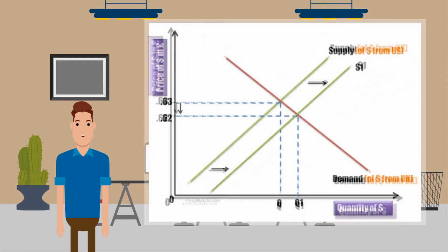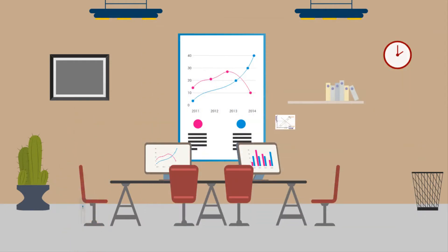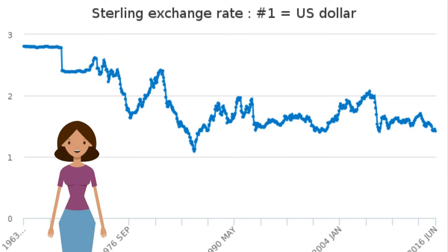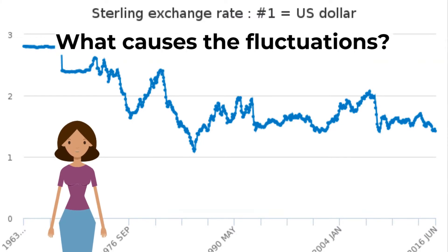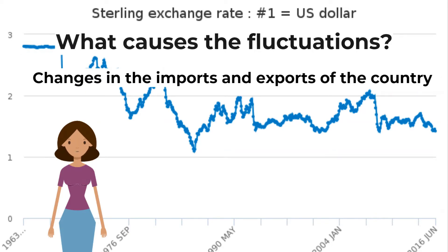Similarly, we can see that the supply of US dollars in the market increases, which forces its price down from 63 cents to 62 cents.